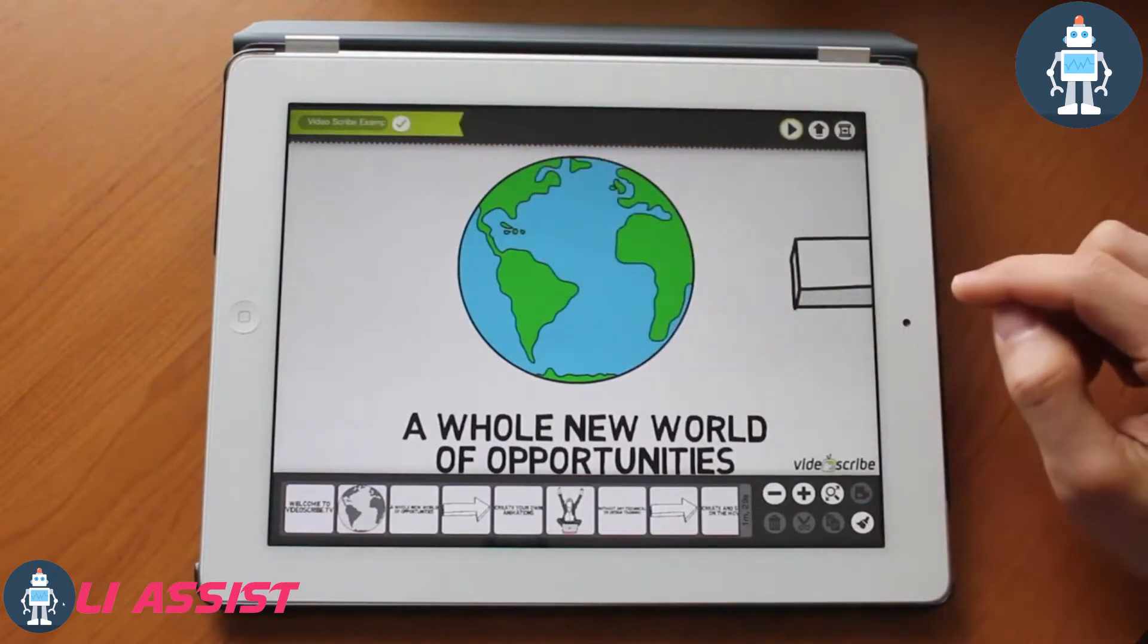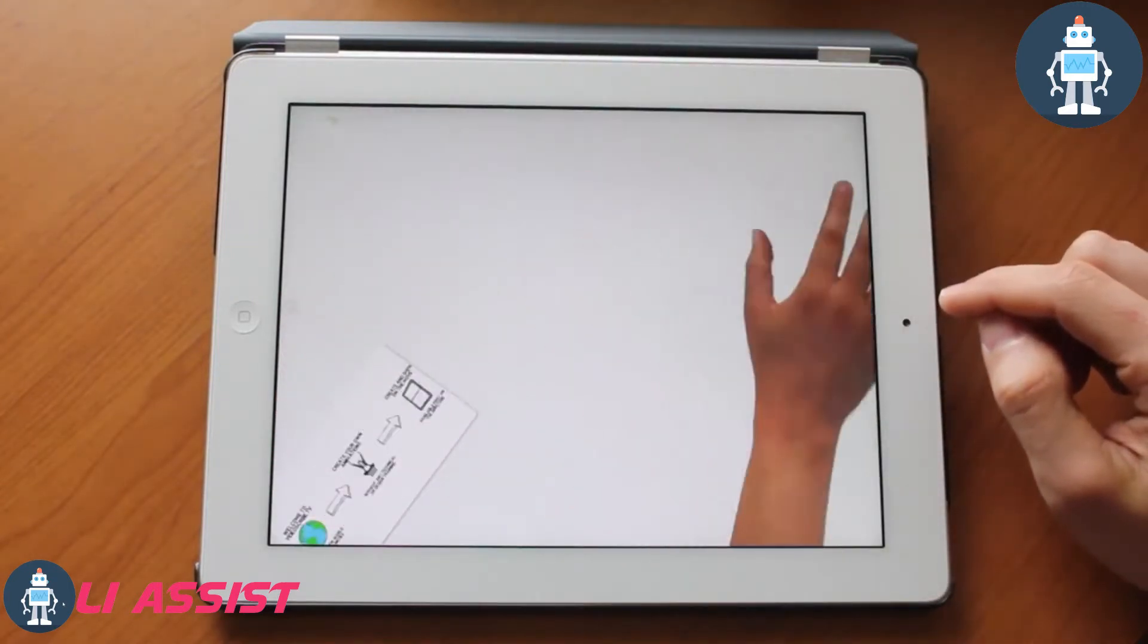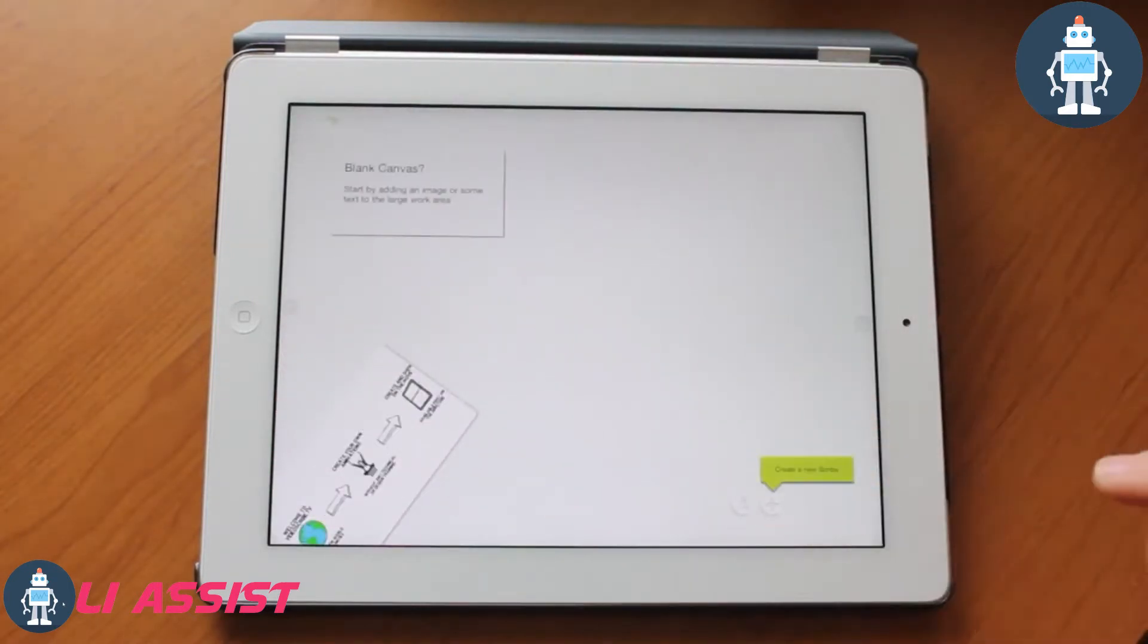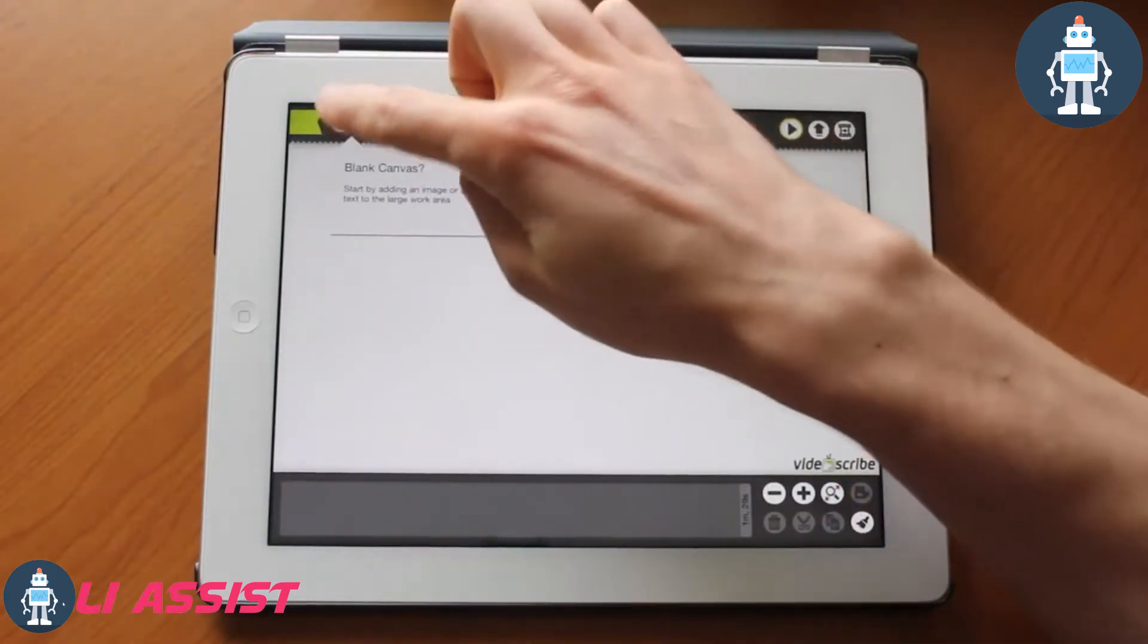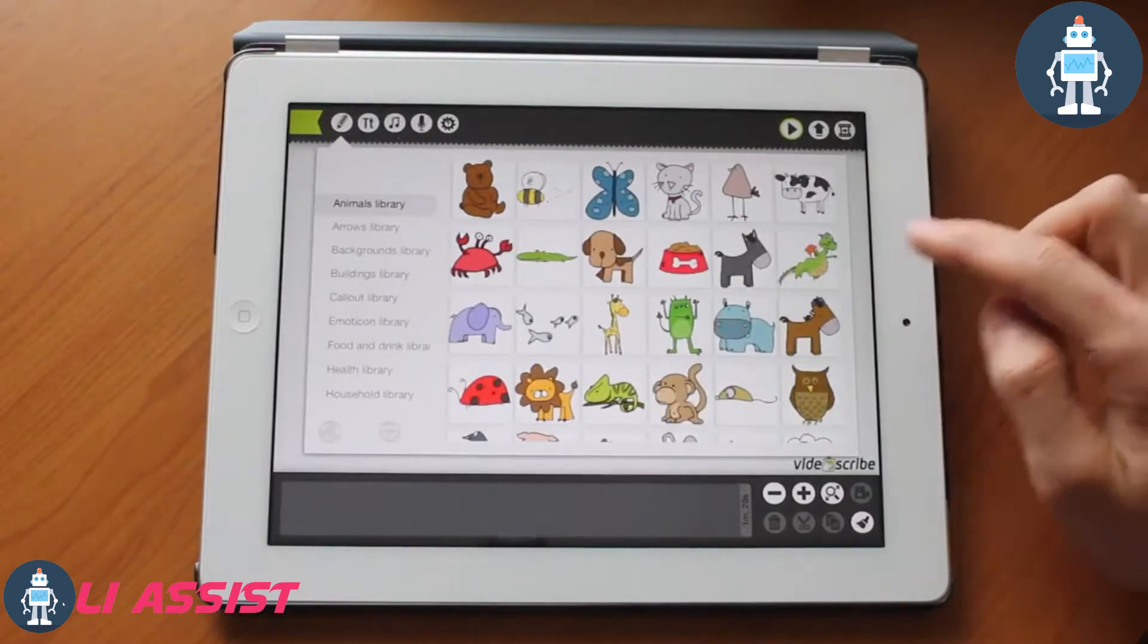We'll jump out and create our own animation using a blank canvas by tapping this little plus button over there. Now if you tap the pencil on the top left, it will take you to the library of things you could do with this application.